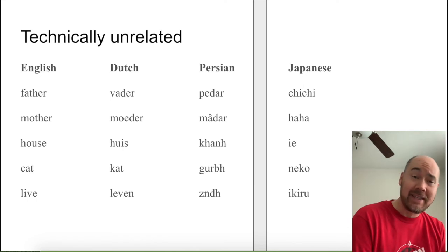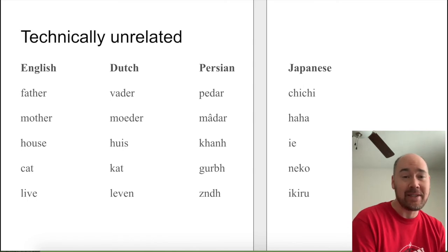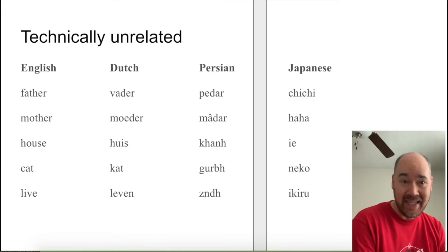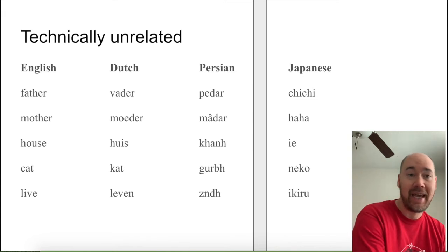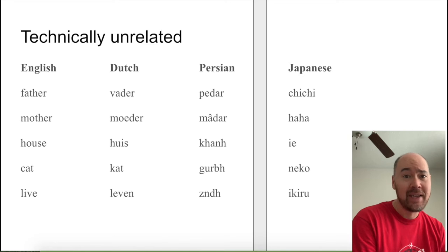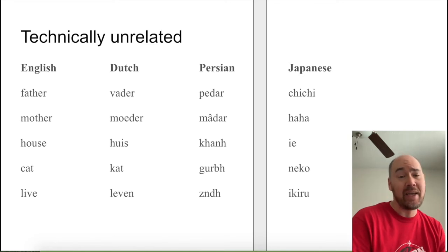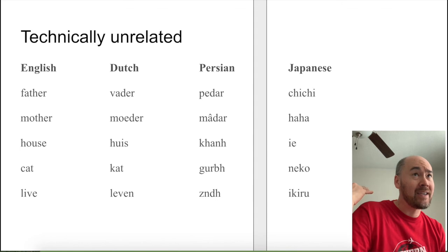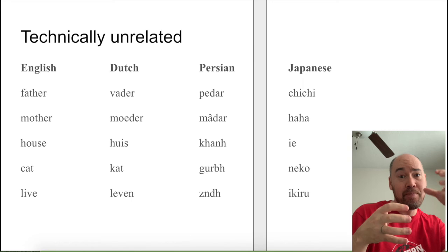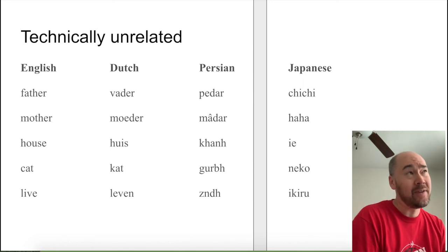Just for comparison, this is what these words look like in a language not in the Indo-European family — Japanese. Japanese has these words for father, mother, house, cat, and live, and you can see it would be very difficult to see any kind of family relationship. We shouldn't expect to see one because Japanese is not in the Indo-European family, meaning no matter how far back you go in time, you're not going to find a group of people who spoke the language that would become both English and Japanese — and if you did, it would probably be tens of thousands of years ago.